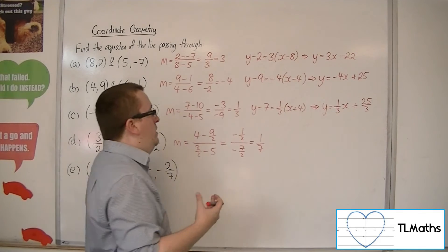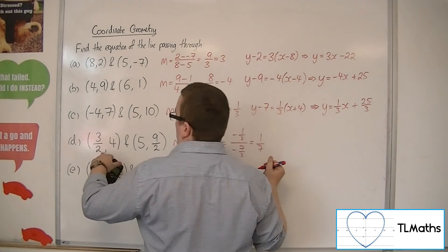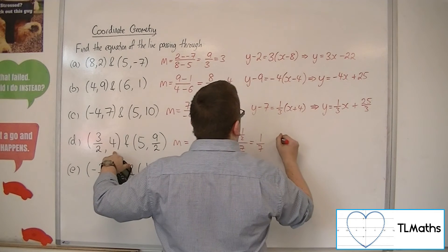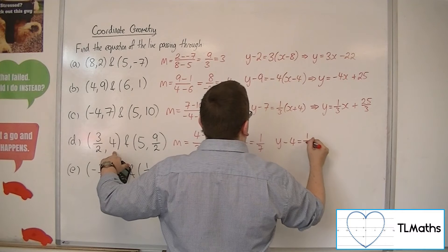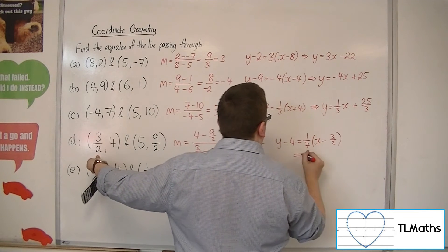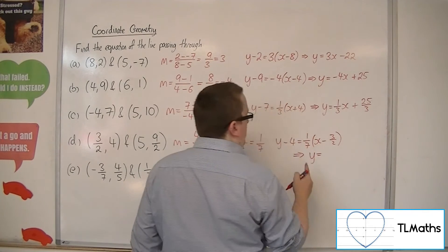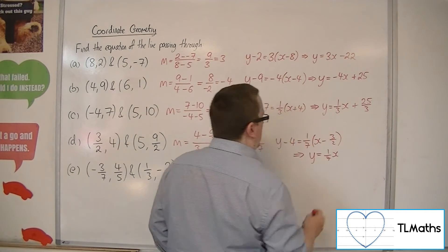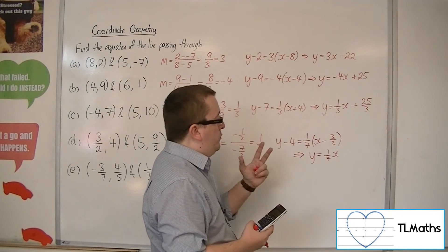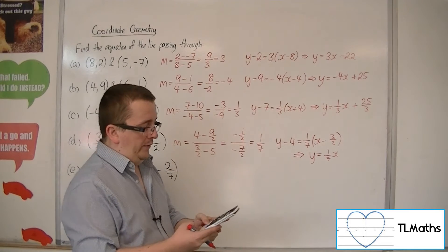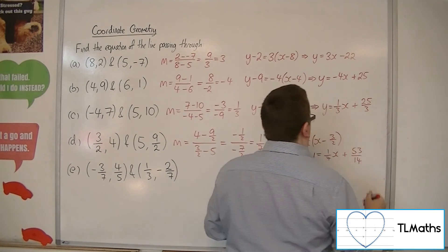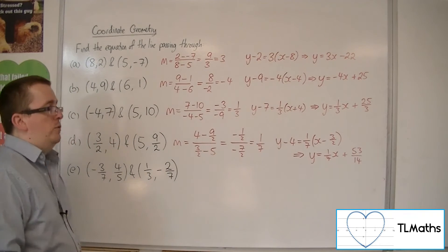So the equation using (3/2, 4) as x1, y1 will be y minus 4 is equal to 1 seventh times (x minus 3 halves). So we'll have y equals 1 seventh x. Multiplying 1 seventh by minus 3 halves gives minus 3 fourteenths. Then adding 4 to both sides gives 53 fourteenths. So y equals 1 seventh x plus 53 fourteenths.